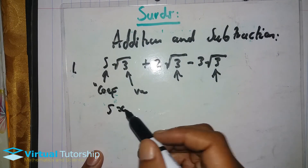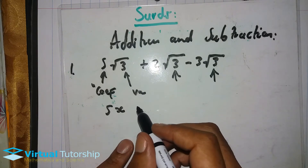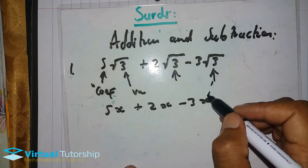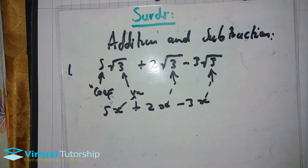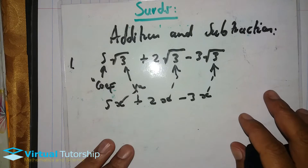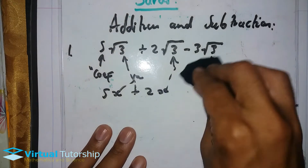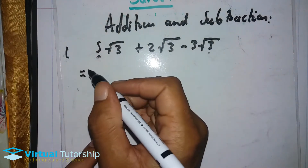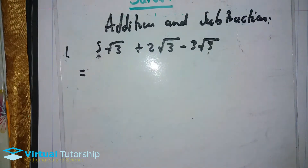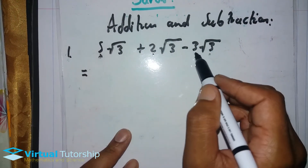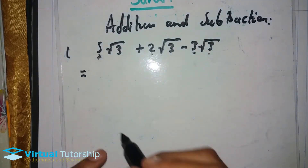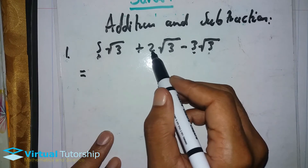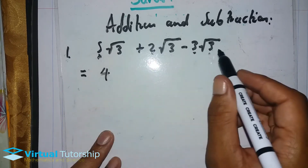We can rewrite this as 5x plus 2x minus 3x, where x represents √3. So whenever you add or subtract like terms, you just work with the coefficients. It's 5 plus 2 minus 3: that gives us 7 minus 3, which equals 4.